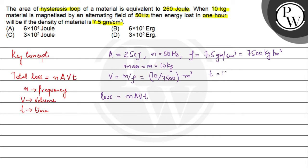We have time that is 1 hour, which we can write as 60 multiplied by 60, that is 3600 seconds. So, we have frequency value that is 50, multiplied by A is 250, multiplied by V is 10 divided by 7500, multiplied by 3600. If we calculate this, it comes out as 6 times 10 raised by 4 joules.